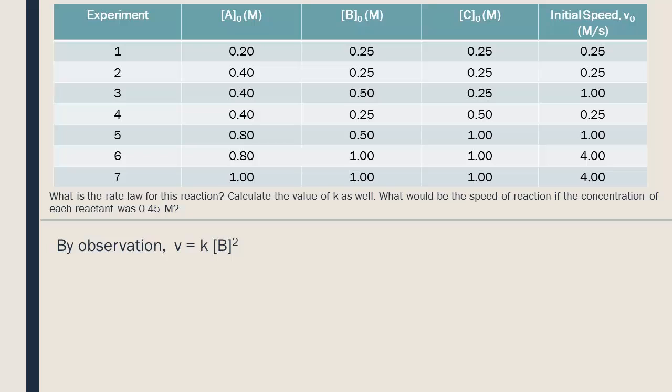To determine the value of K, we can insert the data from any of the experiments. Here, we will use the last experiment just because it has the simplest numbers. We rearrange the equation to obtain a K value of 4.00. The units are included so that you can see how the units for the rate constant are obtained.